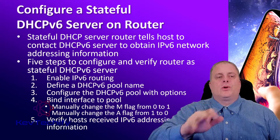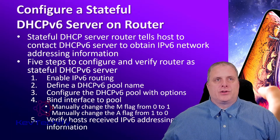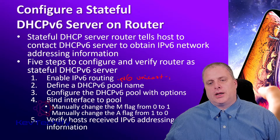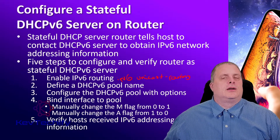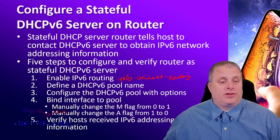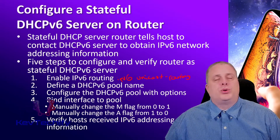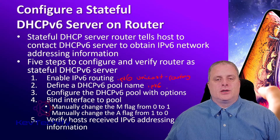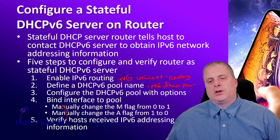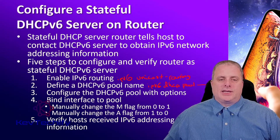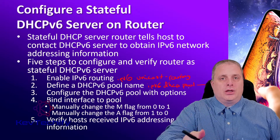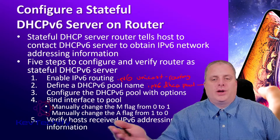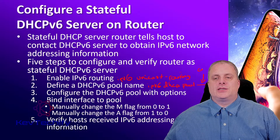There are 5 steps to set up your router as a stateful DHCP version 6 server. First, we have to enable IPv6 routing — that command is IPv6 unicast-routing. It's not turned on by default. Next, we have to define a pool using IPv6 DHCP pool and then the pool name. This command enters into the pool; if that pool doesn't exist, it creates it. As a reminder, this name is case-sensitive.